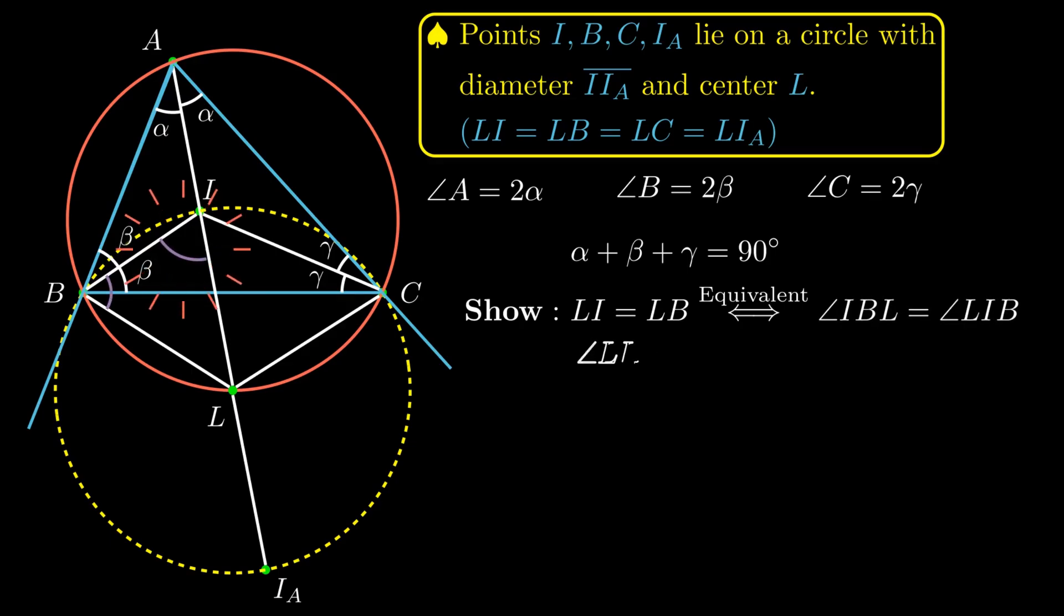Notice that angle LIB equals 180° minus angle AIB, which is the same as angle BAI plus angle IBA, which equals α + β. Then we just have to show that angle IBL equals α + β.